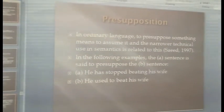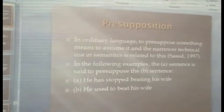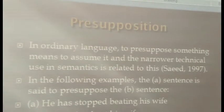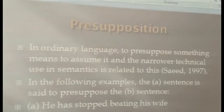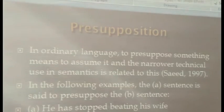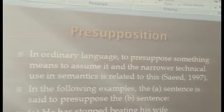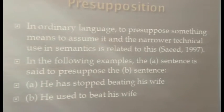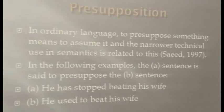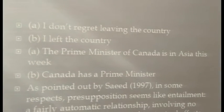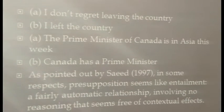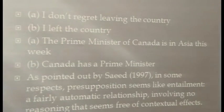That brings us to presupposition, which some scholars consider the twin sister of entailment. In ordinary language, to presuppose something means to assume it. Consider the following presupposition pair: sentence A, 'he has stopped beating his wife', presupposes sentence B, 'he used to beat his wife'. Or: 'I don't regret leaving the country' presupposes 'I left the country'. 'The Prime Minister of Canada is in Asia this week' presupposes 'Canada has a Prime Minister'.